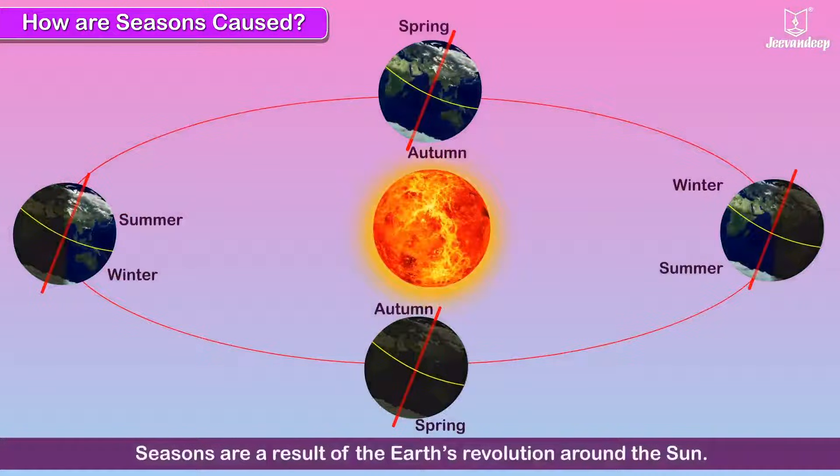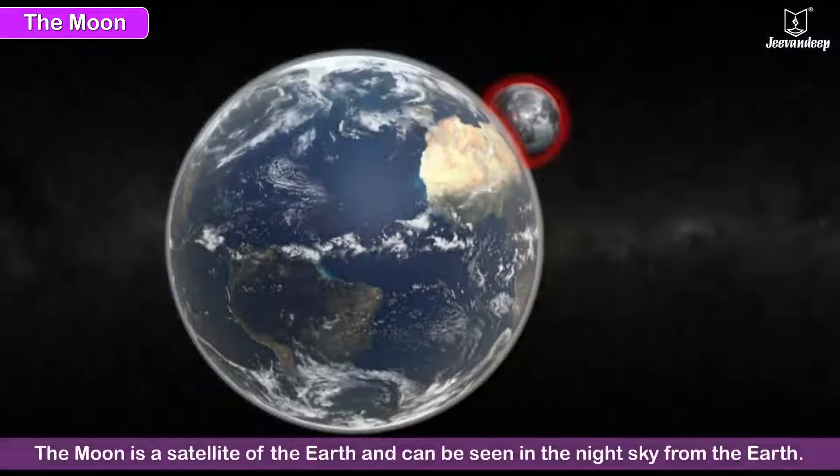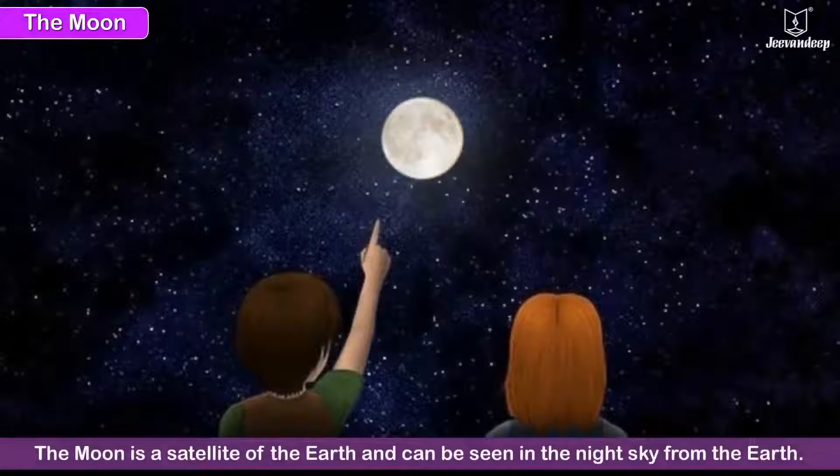Seasons are a result of the Earth's revolution around the Sun. The Moon: the Moon is a satellite of the Earth and can be seen in the night sky from the Earth.